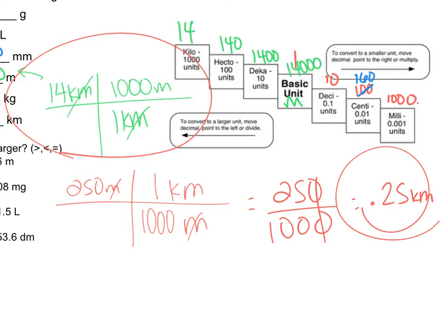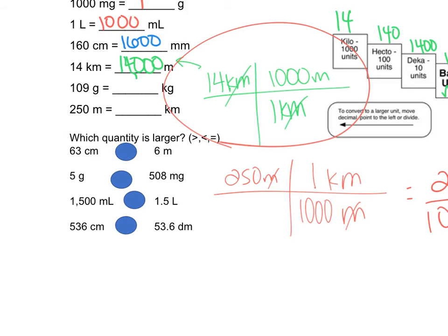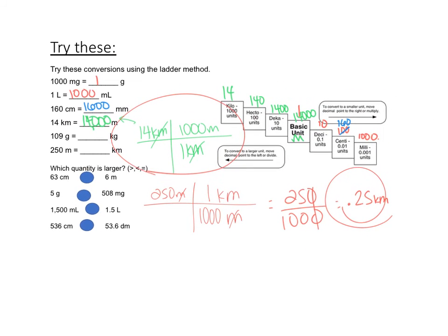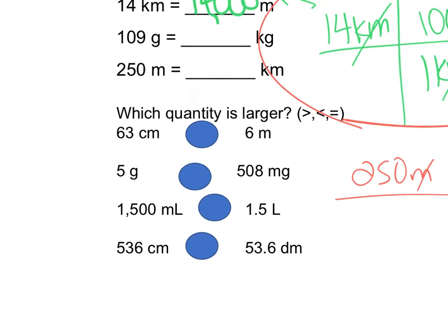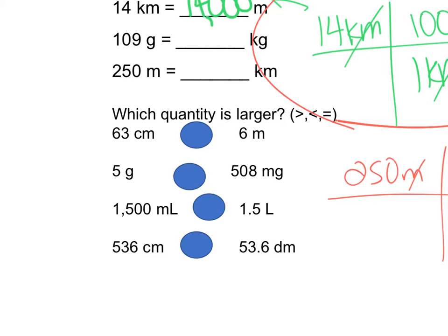Units give things meaning. It's important. So always ask yourself, if I calculate this and I said 250 meters was 25,000 kilometers, that maybe shouldn't make sense to you, because you know kilometers are bigger, right? You know miles are bigger than feet. So if the final number that you get does not make sense, you need to ask yourself, does that make sense? So ask yourself, which is bigger, 63 centimeters or 6 meters? You guys know meters are bigger, right? Grams versus milligrams, which is bigger? Grams are going to be bigger, right?